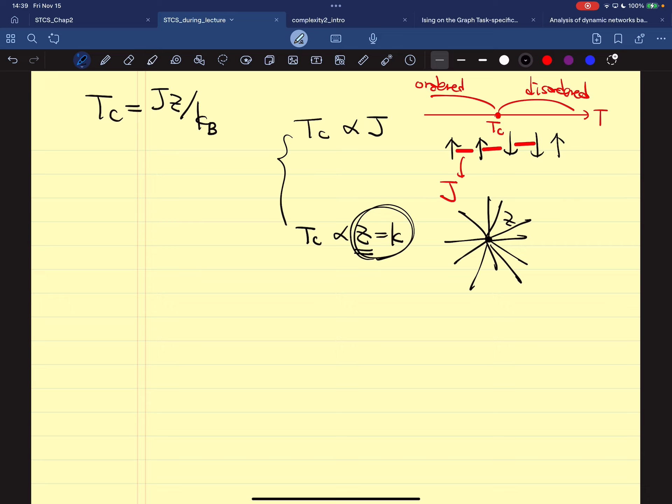But you can actually imagine some situation—for example, if we have a very large hub like this. To make this spin system disordered, you need a much higher temperature.